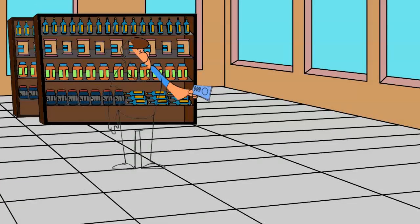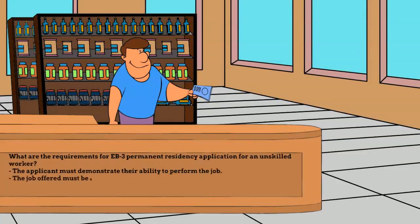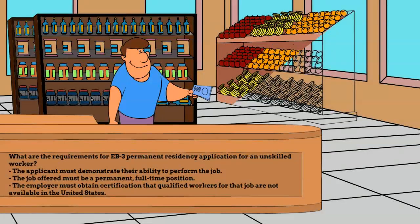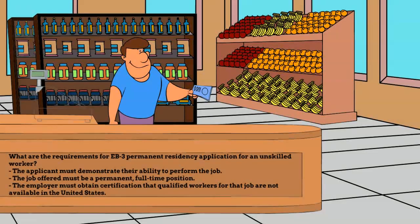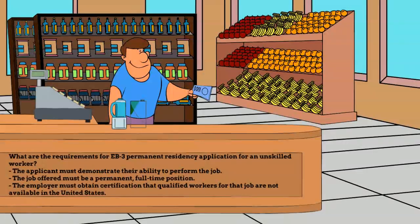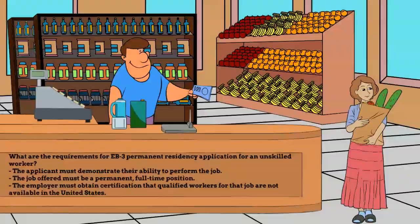What are the requirements for EB-3 permanent residency application for an unskilled worker? The applicant must demonstrate their ability to perform the job. The job offered must be a permanent, full-time position. The employer must obtain certification that qualified workers for that job are not available in the United States.